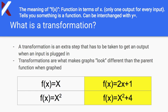We have the parent function f(x) = x, and here we have the same parent function with transformations. To get an output, you would first multiply the value by 2 and then add 1. This function here is called the quadratic function, and when you elevate a value to the power of 2, that's not considered a transformation. The only transformation here would just be adding 4.